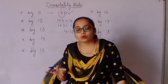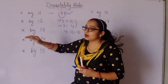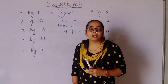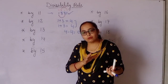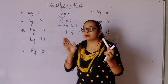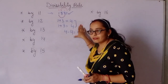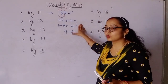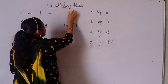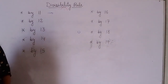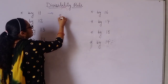For the divisibility rule of 11: add the digits at odd places, then add the digits at even places, then subtract them. If the difference is 0 or divisible by 11, then that number is divisible by 11. Let's take one more example: suppose I take the number 23467.